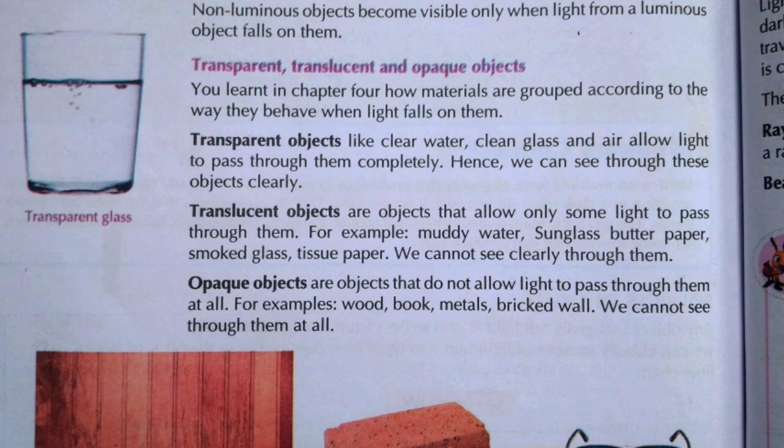So today we covered the introduction to light, sources of light - both natural and man-made, luminous and non-luminous objects based on the ability to emit light, and another classification: transparent, translucent, and opaque objects. Let us wind up today's session. Thank you, my guys.